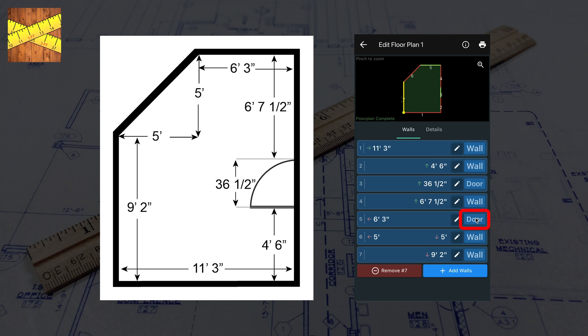You can toggle between walls, doors, and windows by tapping the labels on the right. You can also click the Edit icon to fix dimensions.